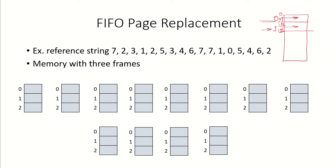If this is the reference string and the main memory has only 3 frames, let us count the number of page faults. Assuming all frames are initially available: first there is a reference for page 7, so page 7 is put in frame 0 — this is a page fault, indicated by an arrow. Then there is a reference to page 2, which is not in memory, so it is a page fault and page 2 is put in frame 1. Then page 3 is referenced, also not in memory, brought into frame 2 — another page fault.